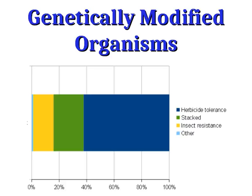Herbicide tolerance means those plants are resistant to a specific herbicide. You often see plants labeled as 'Roundup Ready,' meaning they're resistant to the herbicide Roundup — so that herbicide can be sprayed on the field, it will kill the weeds and not kill the genetically modified plants, and so the GMO crops will grow more easily without competition from weeds, and therefore the yield will be higher.